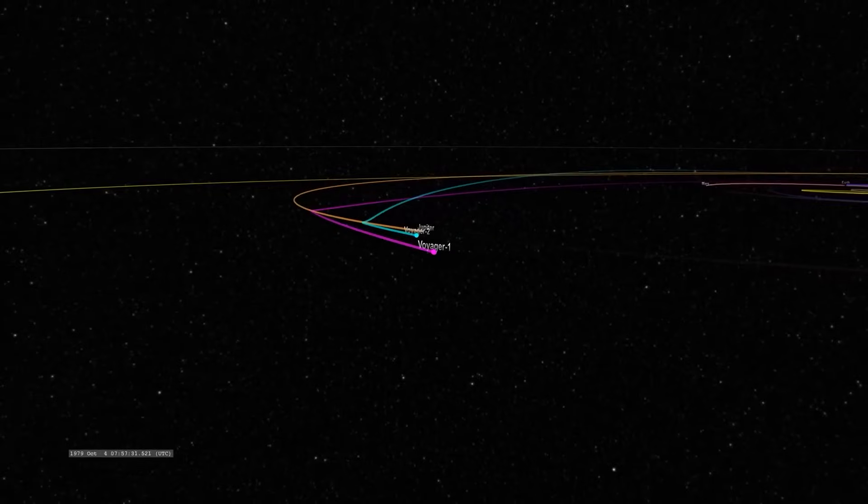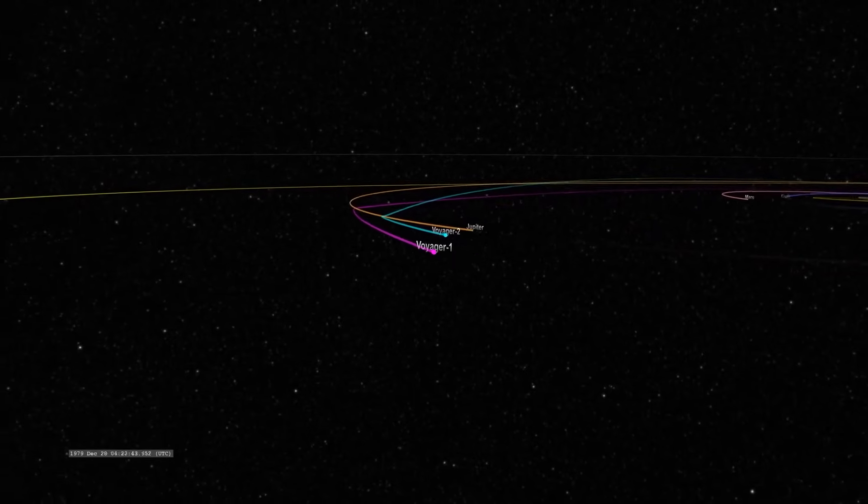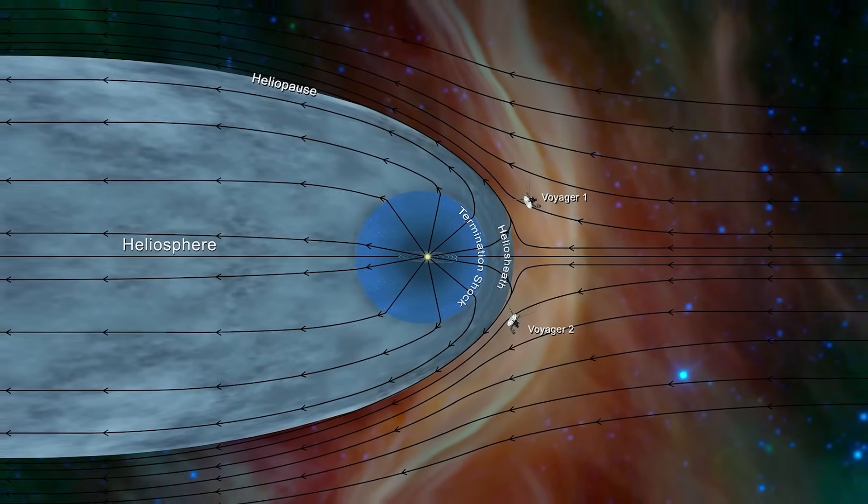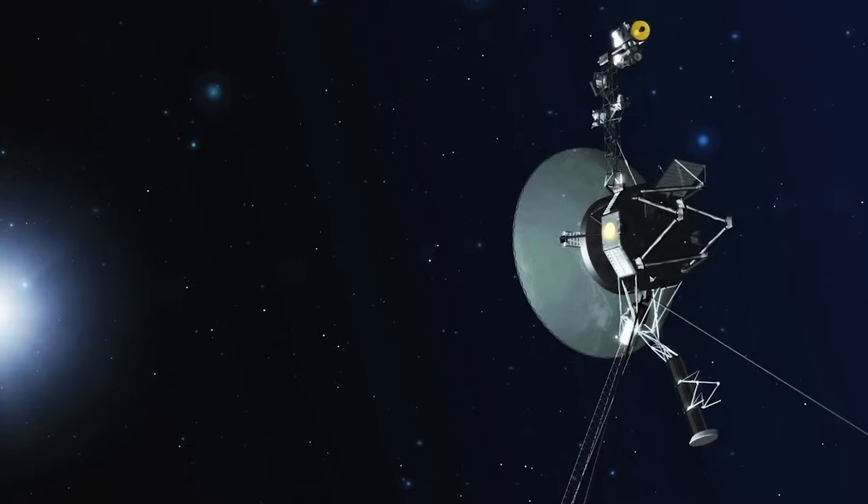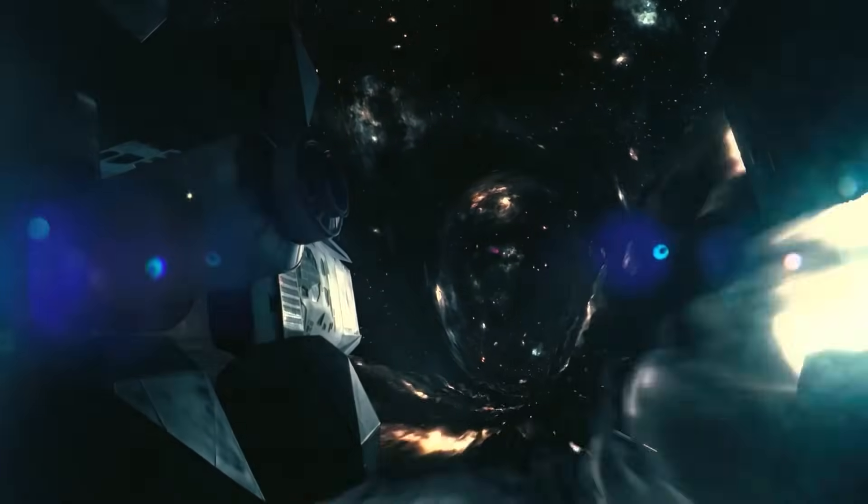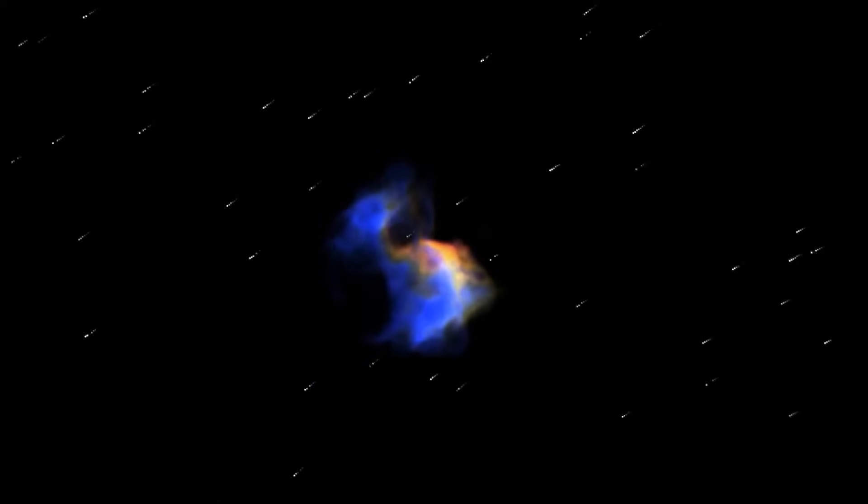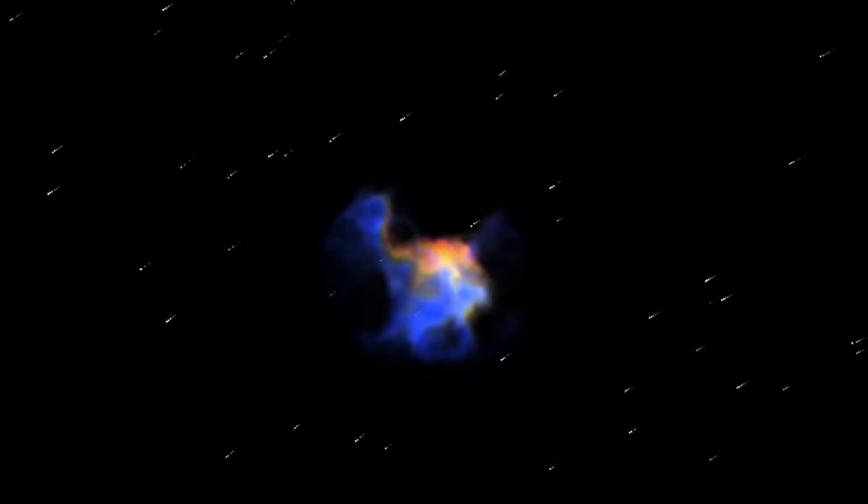Another proposal is Voyager 1 passed through an unknown plasma blob in interstellar space, encountering a region with unusually high density. However, given the vast distances involved, this blob would need to measure billions of miles across to influence the readings. No known structures in deep space fit the profile.